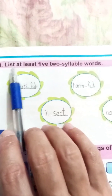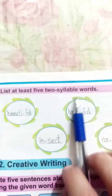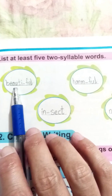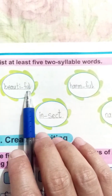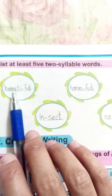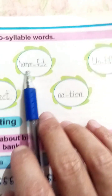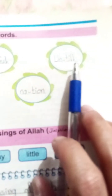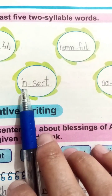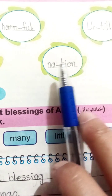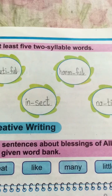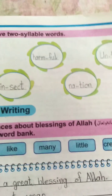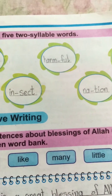Learning to write - list at least 5 two-syllable words. First: beautiful - beau-ti-ful. First part is 'beau-ty,' second part is 'ful.' Second: harmful - harm-ful, first part is 'harm,' second part is 'ful.' Third: until - un-til. Fourth: insect - in-sect, first part is 'in,' second part is 'sect.' Fifth: nation - na-tion, first part is 'na,' second part is 'shun.' Ye hain two syllable words - aise words jo do parts mein taqseem hote hain.